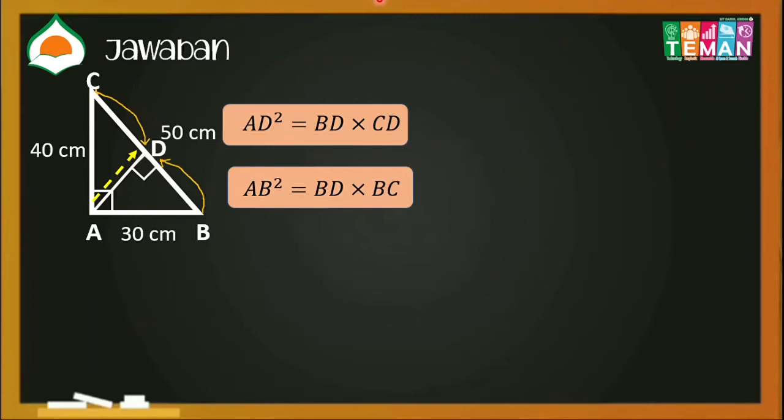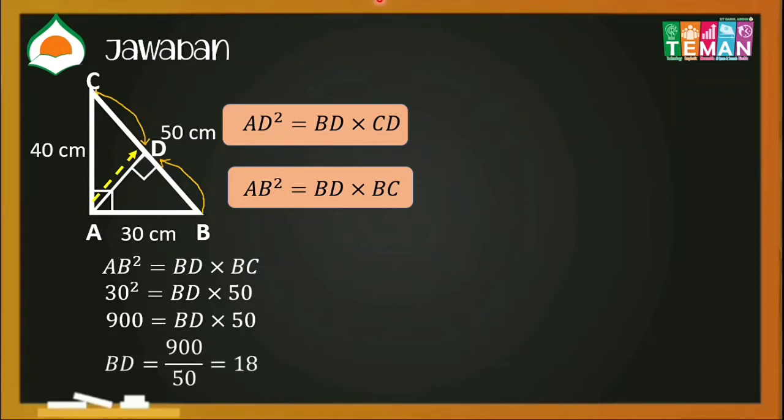Pakai triple Pitagoras ya, teman-teman. Yuk, kita masukkan nilainya. AB-nya 30, lalu BC-nya 50, BD-nya mau dicari ya. Maka menjadi seperti ini hitungannya. Dan BD-nya sama dengan 900 dibagi 50, sama dengan 18.